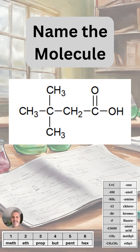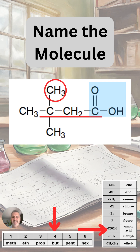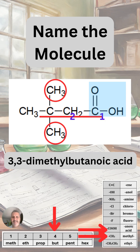Let's see if we can name this molecule. This is a carboxylic acid because it has the C double bond O and another OH coming off the same carbon. It's going to have the ending '-anoic acid'. There are four carbons in the longest chain, so it's going to be butanoic acid. We also see that there are two methyl groups coming off the carbon that is second from the right. The carboxylic acid group is given priority as number one, and we number from there: one, two, three. The two methyls are coming off the third carbon, so the name of this molecule is 3,3-dimethylbutanoic acid.